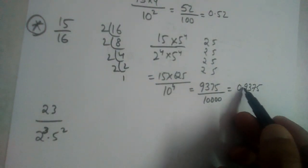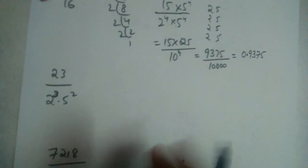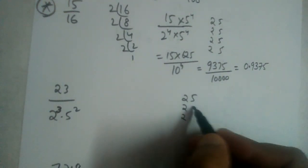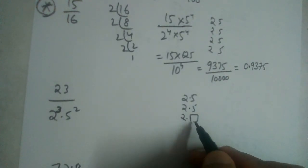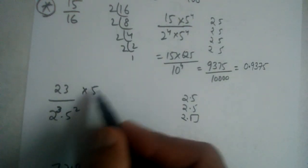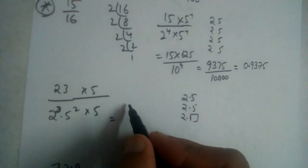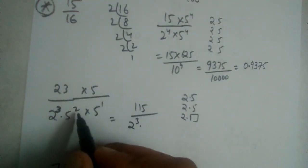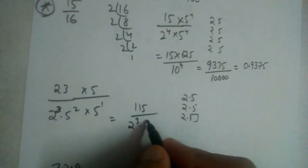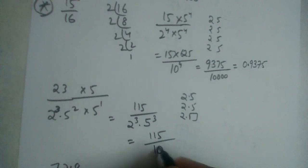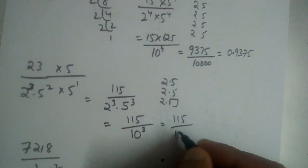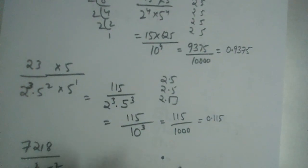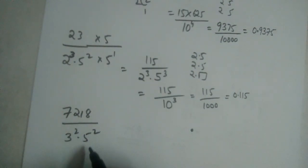For 23/(2³ × 5²): 2 appears three times and 5 appears two times, so one 5 is missing. Multiply numerator and denominator by 5. Then 23 × 5 = 115, and the denominator becomes 2³ × 5³ = 10³. So 115/1000 = 0.115.